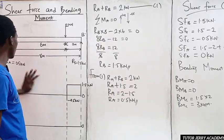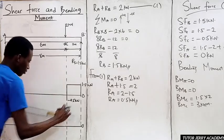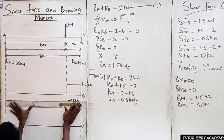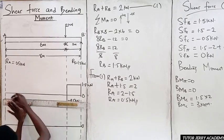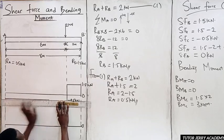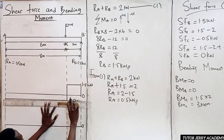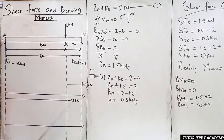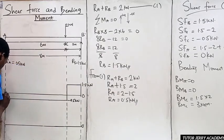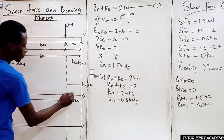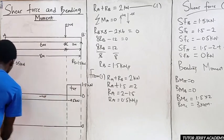We draw a constant horizontal line from C to A since there is no load in between. Finally, the shear force at A is 0, so we return to zero. The upper region is positive and the lower region is negative. This completes our shear force diagram.